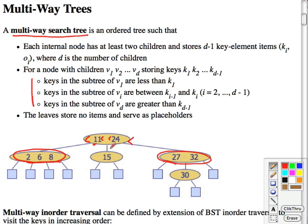This generalizes the nodes by putting more data in a node. One difference between these and a binary search tree is that the leaves have no data. They're just going to be placeholders.